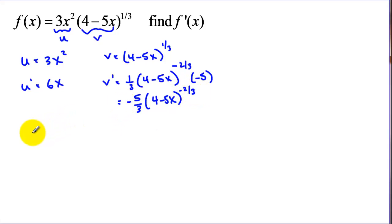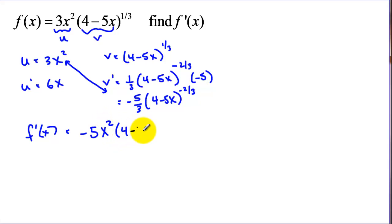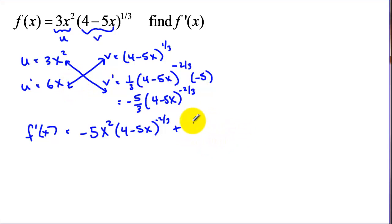Now if we use Mr. T's method for the product rule, remember we cross multiply our u and v prime. So here we have 3 times negative five thirds, which would be negative five. Now we have our x squared and we have our 4 minus 5x to the negative two thirds. And then we add to that our u prime times v — that cross — so we have 6x times that expression. Now we've actually completed the derivative at this point.